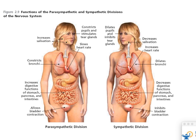Parasympathetic increases digestive functions. After a traumatic event, all you can think about is food — greasy, fatty food. And it also allows for bladder function — you'll finally have to pee. There you go.